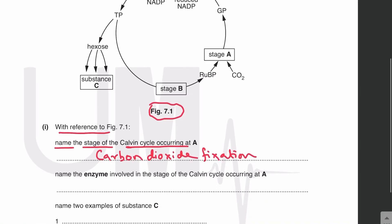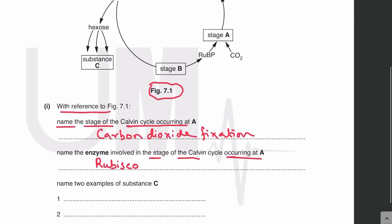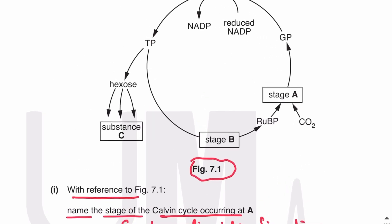Name the enzyme involved in the stage of the Calvin cycle occurring at A. The enzyme involved in carbon dioxide fixation is Rubisco. Name two examples of substance C. We can see that TP is being converted to hexose, and hexose is converted into substance C.